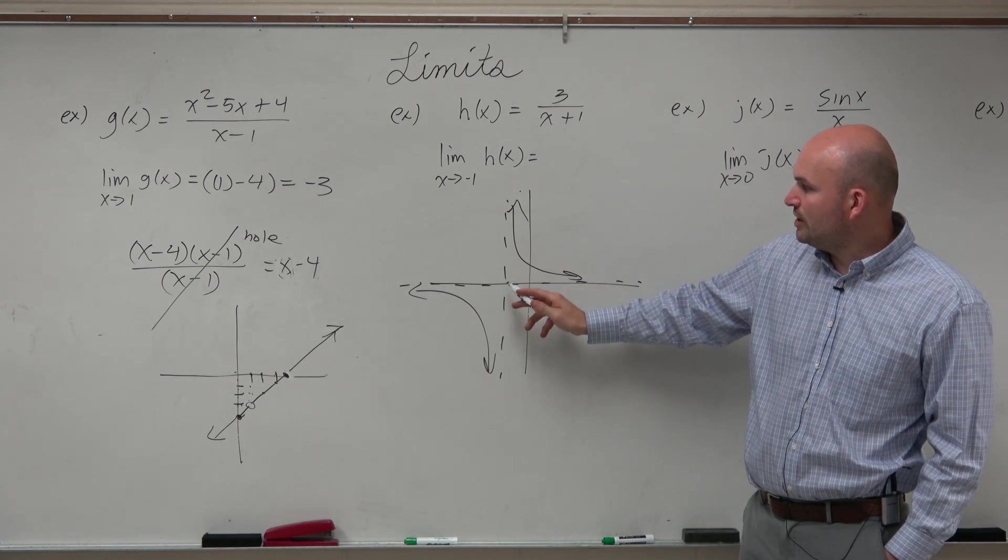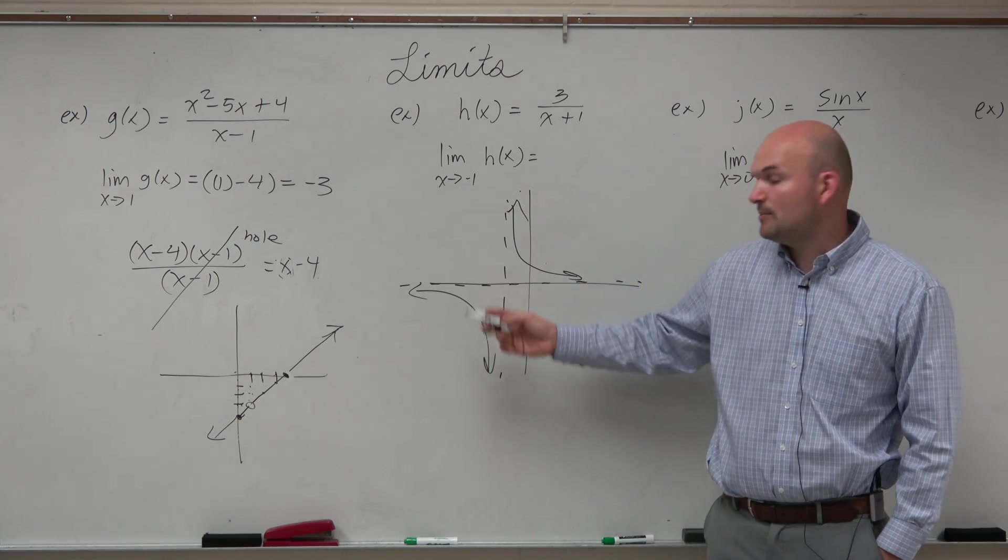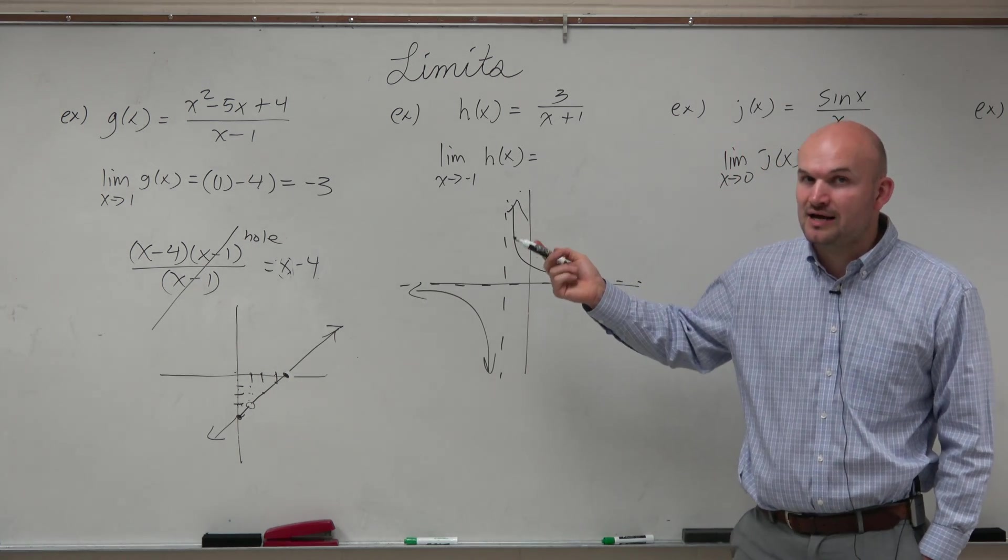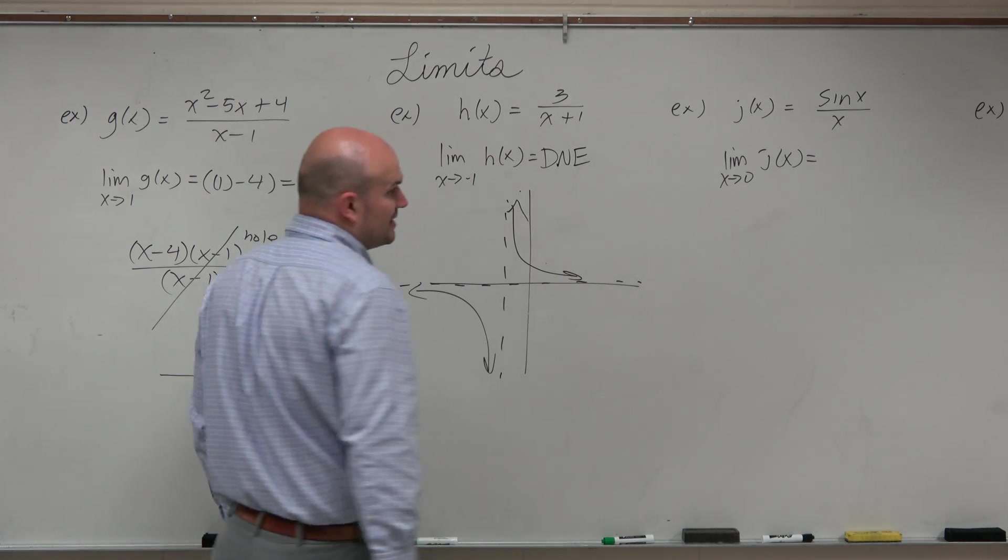And so if I want to approach negative 1, well, since I have to approach negative 1 from the left and from the right, I say that's approaching a vertical asymptote. The left-hand limit and the right-hand limit obviously do not go to the same value. So this is one of those nice does not exist.